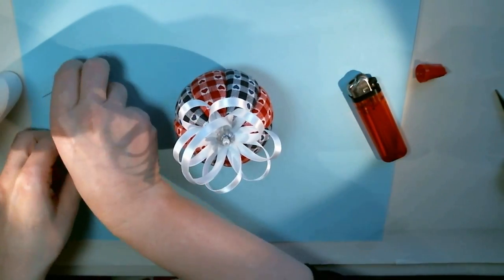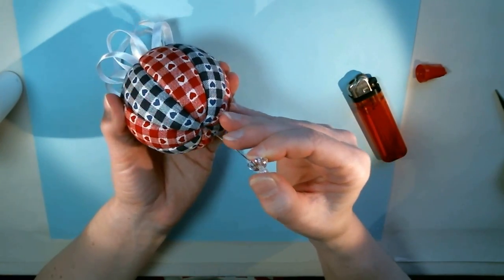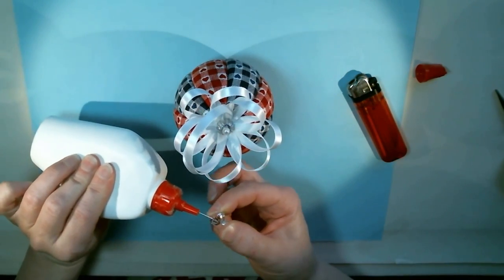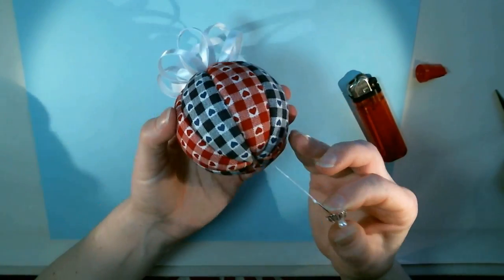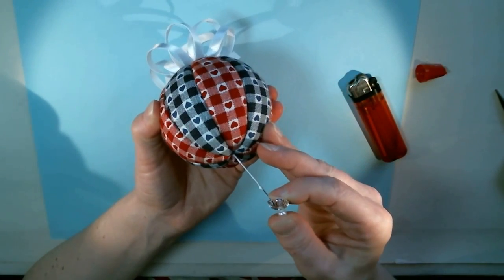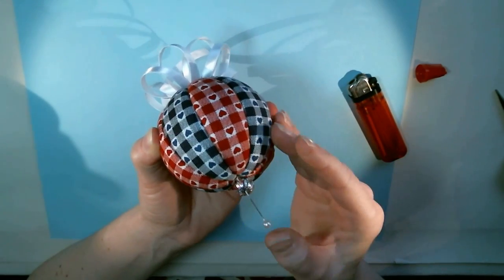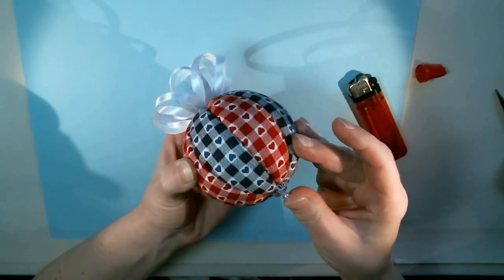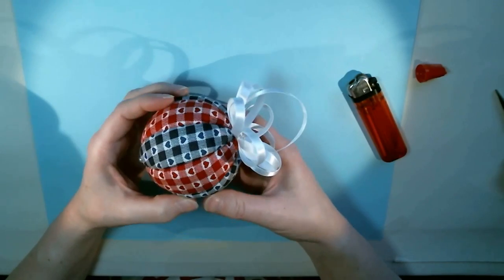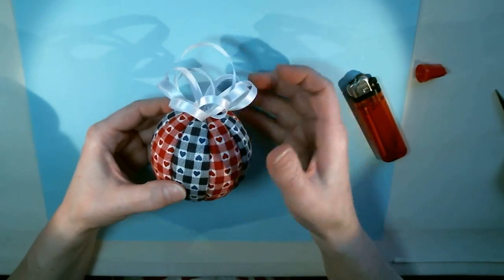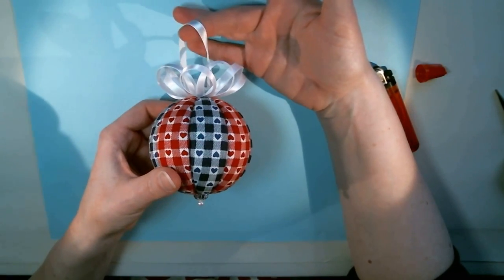And then I'm going to finish my ornament off by putting a bead cap in the bottom. Don't forget my glue. Okay that's done and we're finished, and there is a pretty eight loop bow with the hanging ribbon. That was pretty easy.